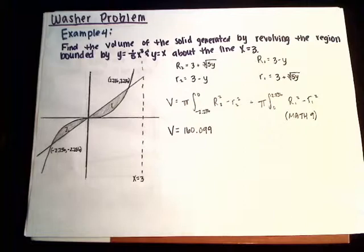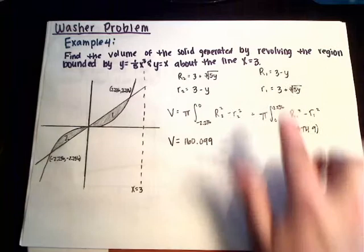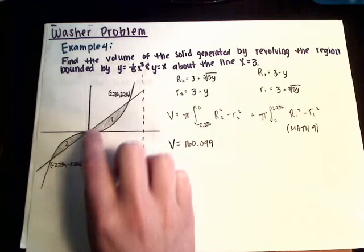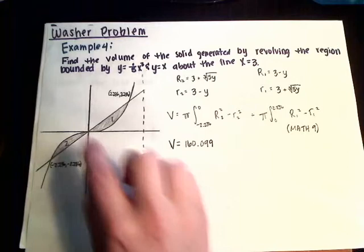Now we must do the same thing for section 1. To find big r, we solve for x in the equation y equals x again, and subtract that from 3. Then for little r, we solve for x in the equation y equals 1 fifth x cubed and add it to 3. This gives us big r1 equals 3 minus y, and little r1 equals 3 plus the cubed root of 5y. Now that we have all of our r's, we must find the limits of integration. To do so, we will find the intersection points. Plug the given equations into your graphing calculator, then the intersection points will be your bounds. The bounds of section 2 go from negative 2.236 to 0. The bounds of section 1 will go from 0 to 2.236.